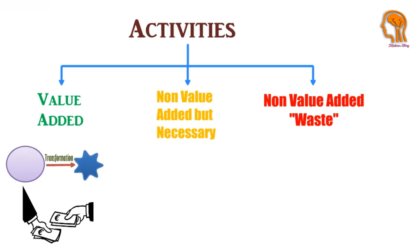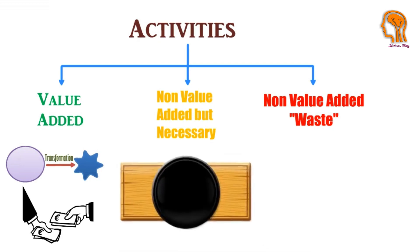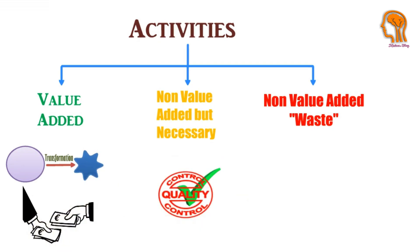Non-value-added activities but necessary are activities that don't directly add value to the finished product but must be done. We can find some examples for that, like quality checks and food safety inspections. On the other hand, non-value-added activities — or waste — are a separate category.